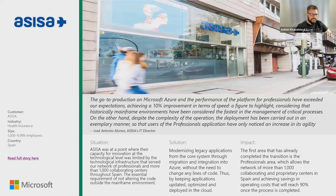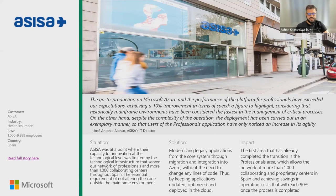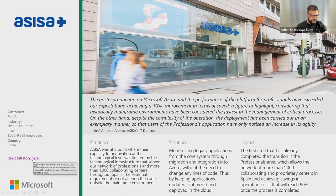I'm going to talk about one of our customer case studies: Acisa. Acisa is a big insurance company in Spain where they have 10,000-plus doctors every day logging onto Acisa to check for insurance, etc. This company was running their insurer application on mainframe databases. Looking at the customer statement — I'll just read it through: 'Microsoft and Azure performance of the platform for professionals have exceeded our expectation, achieving 10% improvement.' Now, since this is a DB forum, I'm going to go into the specifics of how we achieved that 10% improvement.